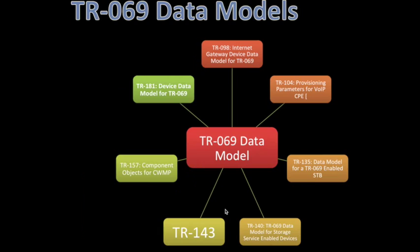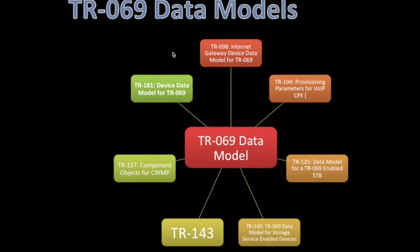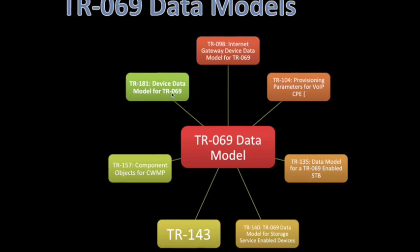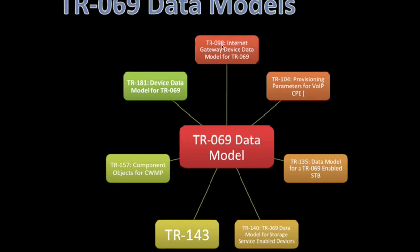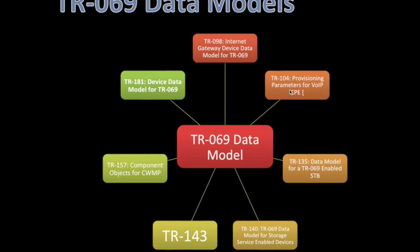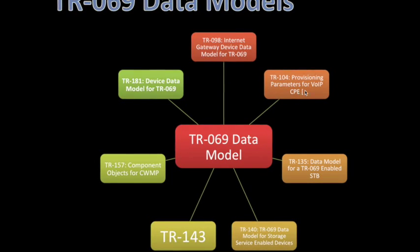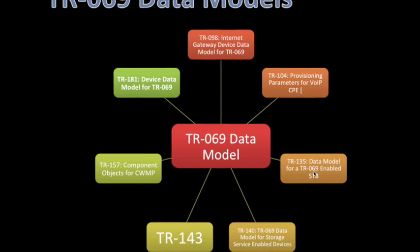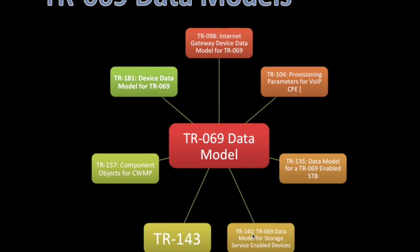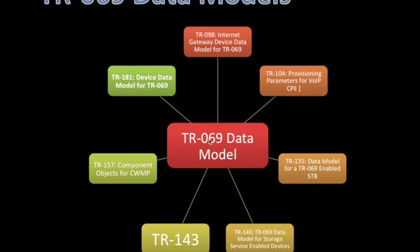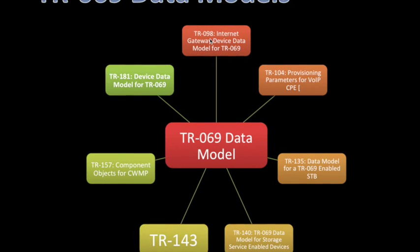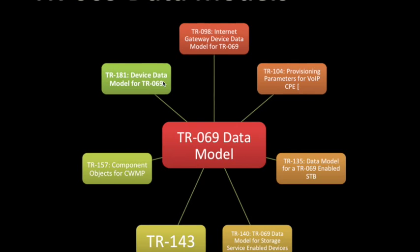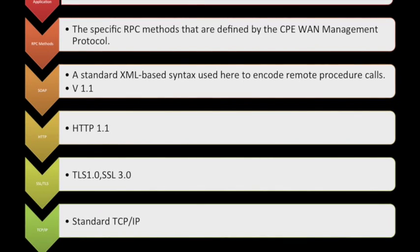For data models, there are many TRs defined. TR-181 is the device data model for TR-069. TR-098 is specific to the internet gateway device data model. TR-104 contains provisioning parameters for VoIP. TR-135 is the data model for TR-069-enabled STBs. Additionally, TR-143 and TR-140 are also defined. These data models operate between the ACS and the server.